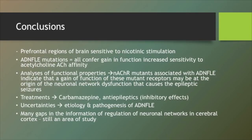The conclusions we can draw are that the prefrontal regions of the brain are sensitive to nicotinic stimulation. ADNFLE mutations all confer a gain of function, which is an increased sensitivity to acetylcholine. Analysis of functional properties of nAChR mutants associated with this disease indicates that the gain of function of these mutant receptors may be at the origin of neuronal network dysfunction that causes epileptic seizures. There are treatments available which are drugs that cause inhibitory effects.